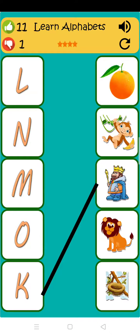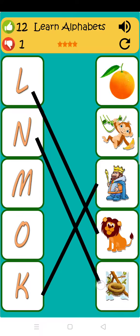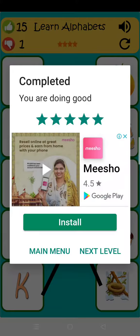K is for king. L is for lion. N is for nest. M is for monkey. O is for orange.